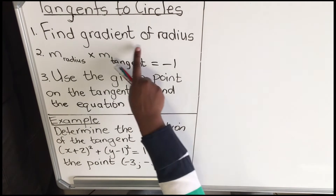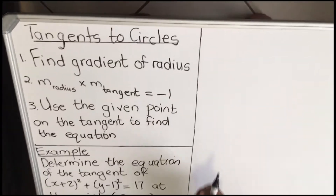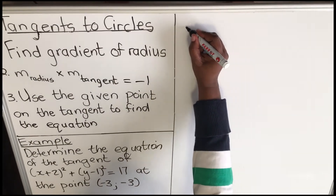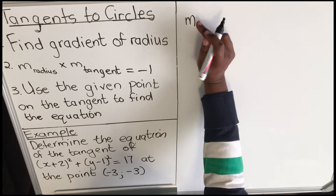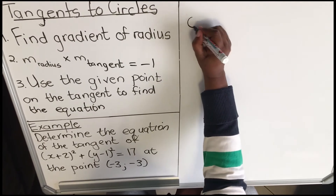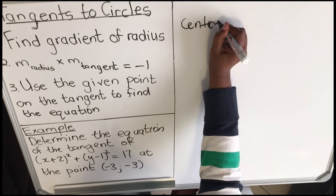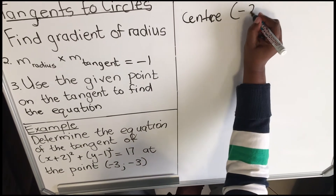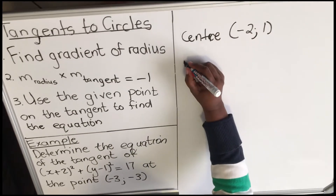Before you find the gradient of the radius, you need to find the center. To find the center, use the equation of the circle — the center comes out as (−2, 1).